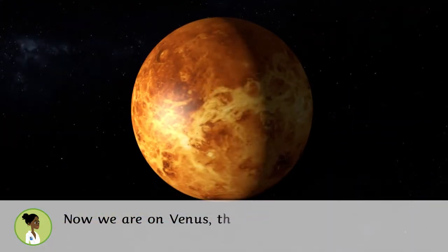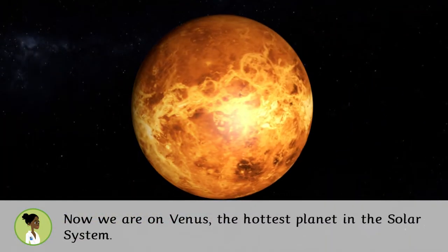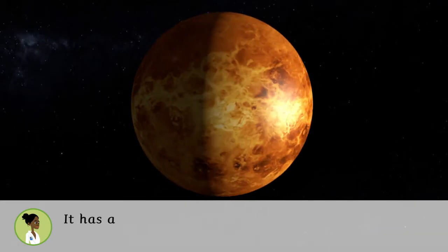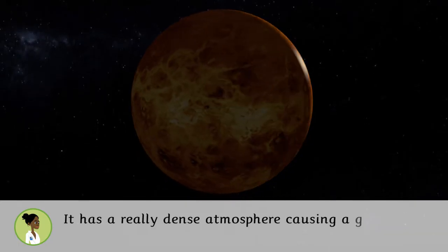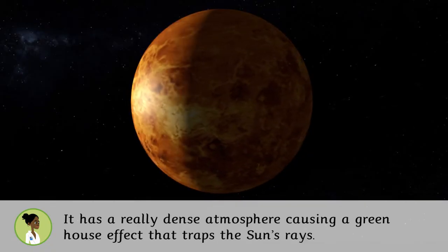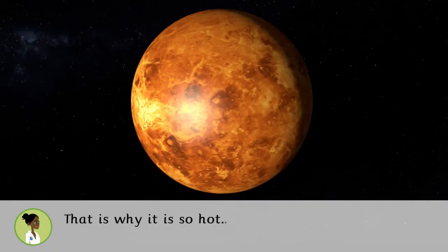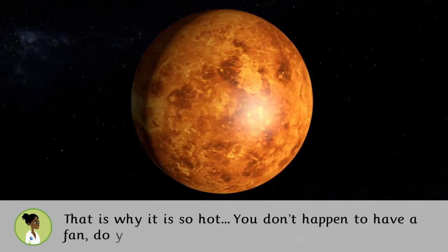Now we are on Venus, the hottest planet in the Solar System. It has a really dense atmosphere causing a greenhouse effect that traps the Sun's rays. That is why it is so hot. You don't happen to have a fan, do you?